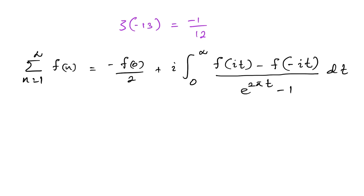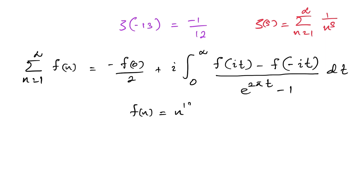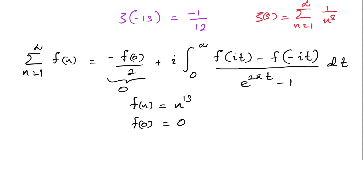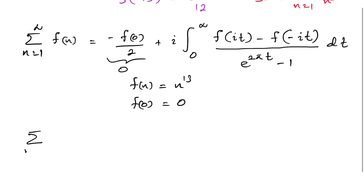We recall that the zeta function is zeta(s) = sum of n from 1 to infinity of 1/n^s. We take f(n) = n^13. Since f(0) = 0, that term vanishes, and we can write: sum of n from 1 to infinity of n^13 equals i times the integral from 0 to infinity of [(it)^13 minus (-it)^13] over [e^(2πt) minus 1] dt.